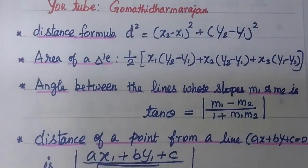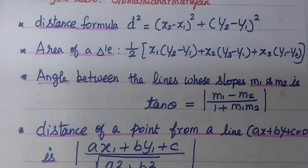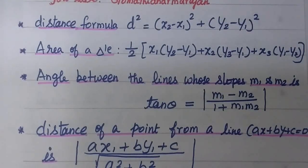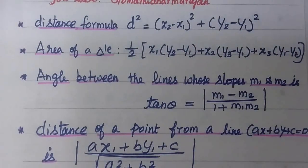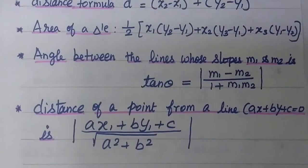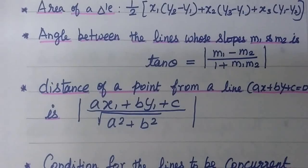Next one: the distance of a point from a line. If the line is ax plus by plus c equal to 0, the distance is the modulus of (ax1 plus by1 plus c) divided by root of (a squared plus b squared). You are given a point and a line, and we use this formula to find the distance.